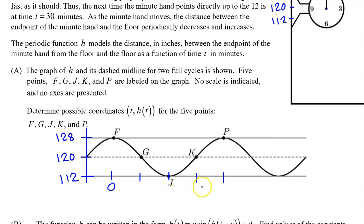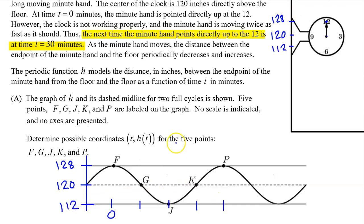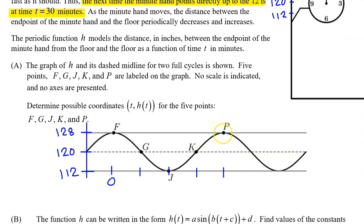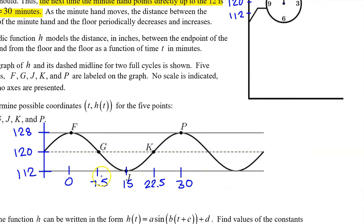We can find the other four input coordinates using the period. The next time the minute hand points directly up to the 12 is at time t equals 30. That means this point right here must be t equals 30. Half of that will be t equals 15. So that's right here. Half of that again is 7.5. So this must be t equals 7.5. 15 plus 7.5 is 22.5.